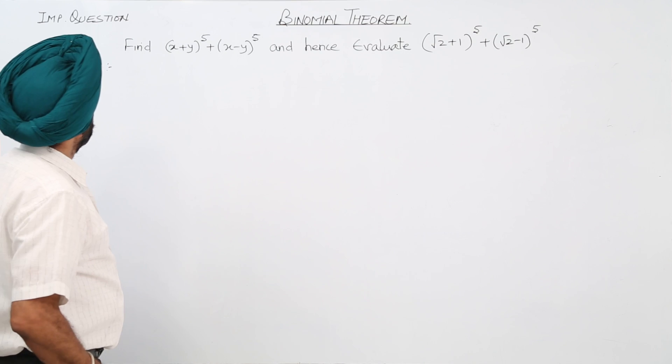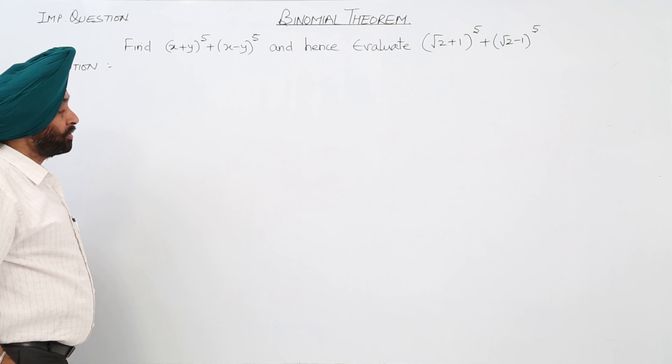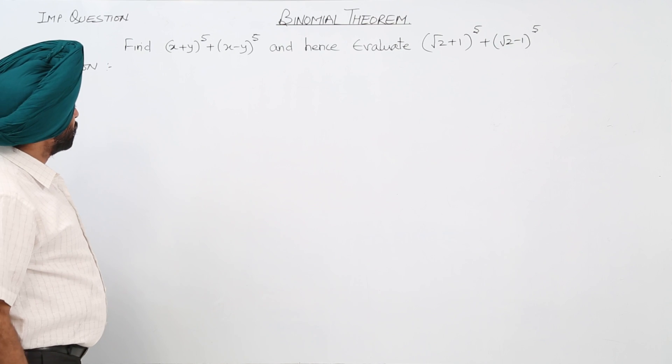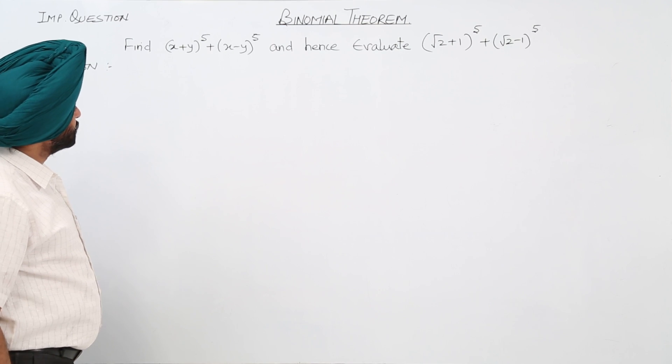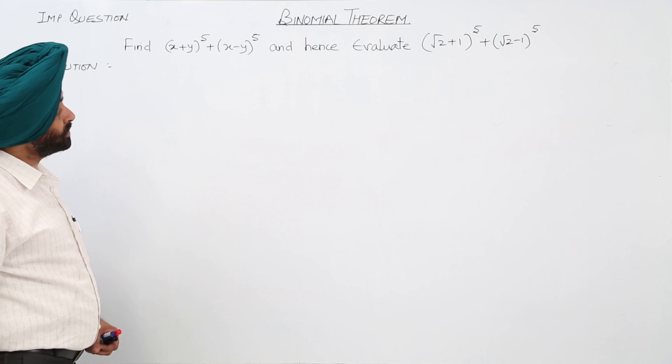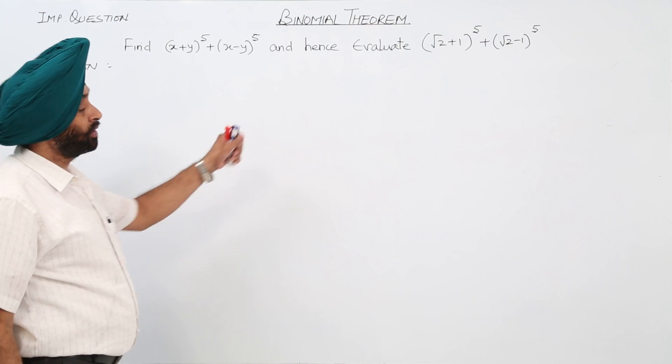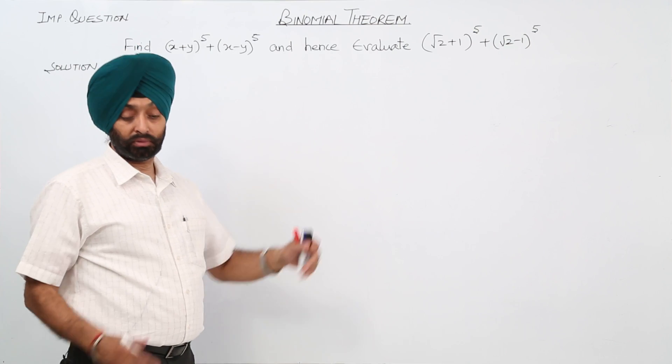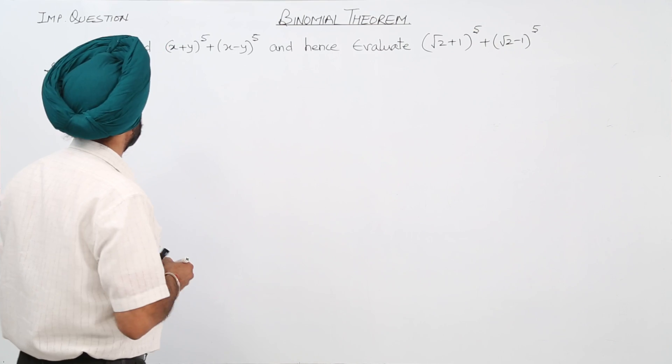The question is to find (x + y)⁵ + (x - y)⁵, and hence evaluate the given expression.